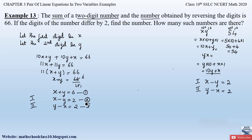In the first condition, we solve equations 1 and 2 by the elimination method to find x and y, then substitute into 10x + y to get the number. In the second condition, we solve equations 1 and 3 (y − x = 2) to determine x and y, then substitute into 10x + y.